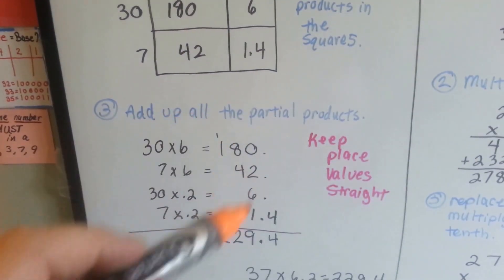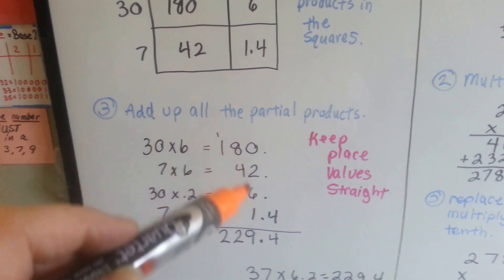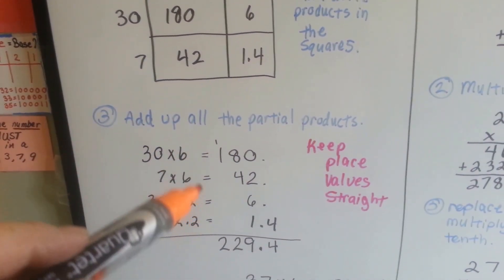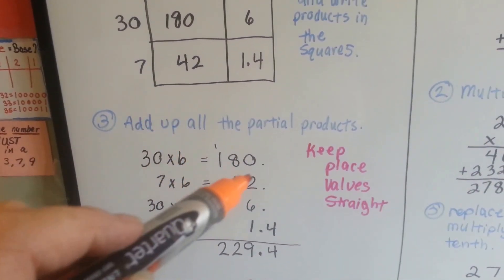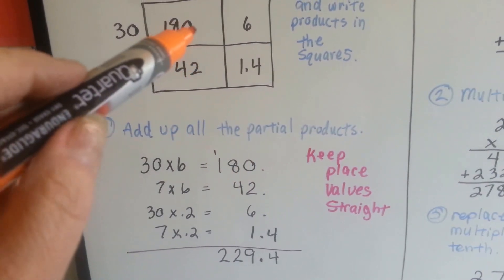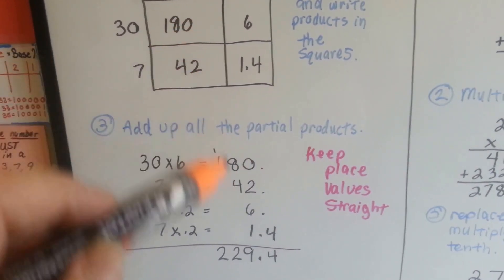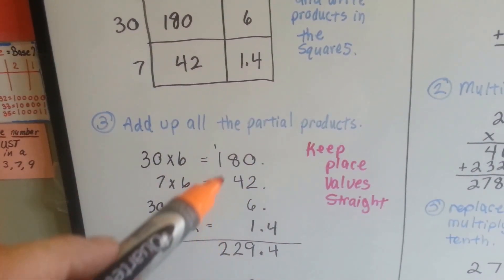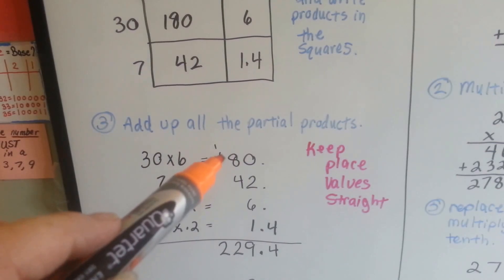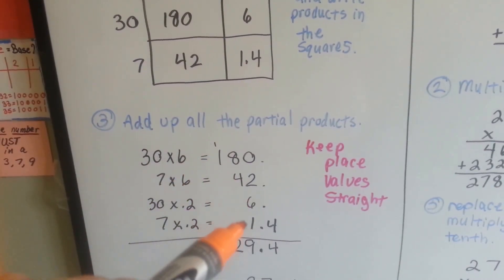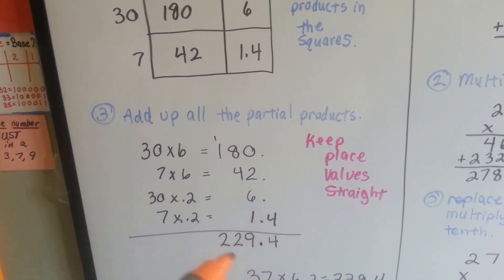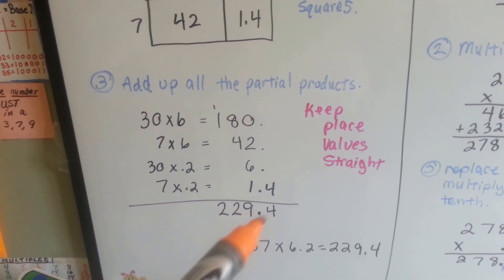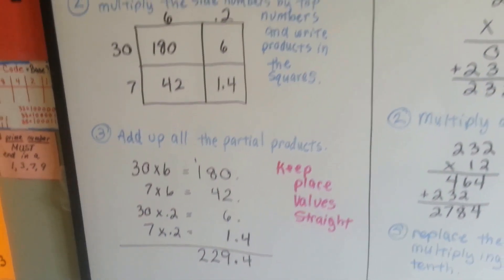We would add up all of our partial products by keeping our place values straight. One way to do that is to add a decimal point at the end of our whole numbers so we can line them all up. We would add the 180, 42, 6, and the 1 and 4 tenths, and we would get 229 and 4 tenths as an answer.